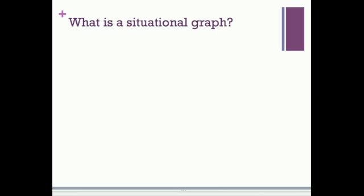What is a situational graph? A situational graph is a type of graph that isn't necessarily formed by mathematical equations, but more by something you see in the real world, or your actions even, perhaps.